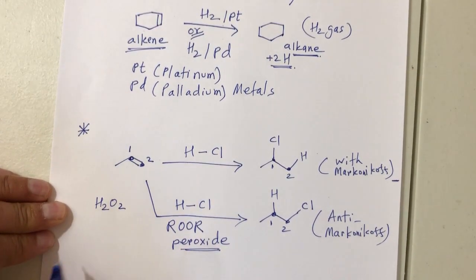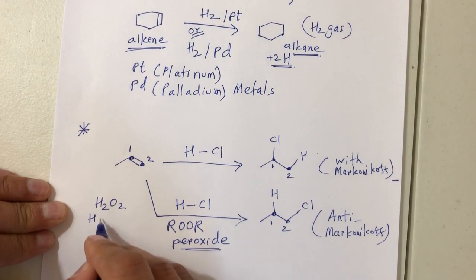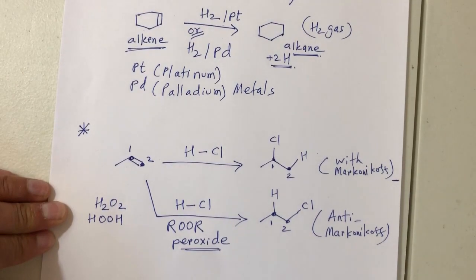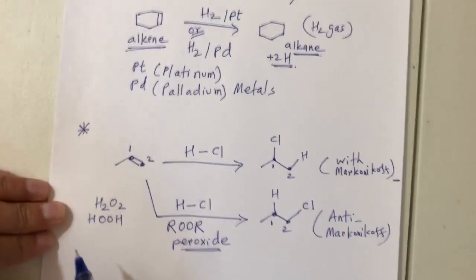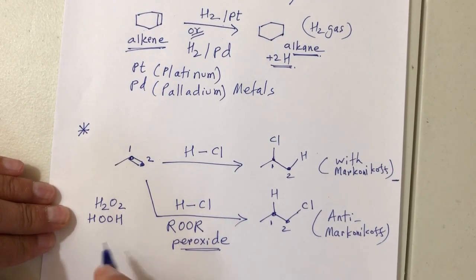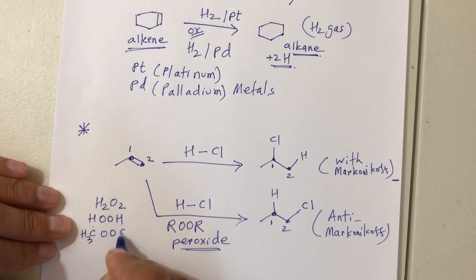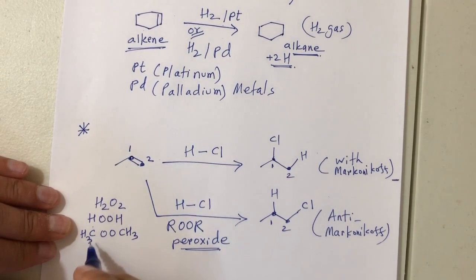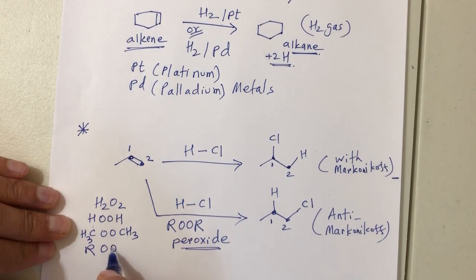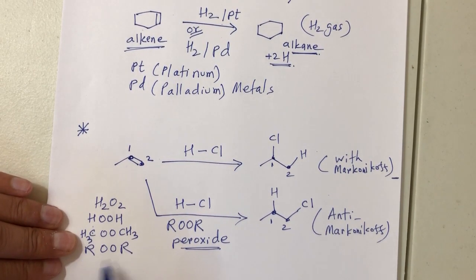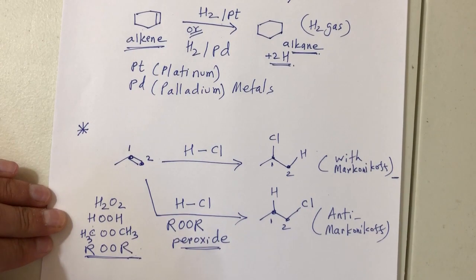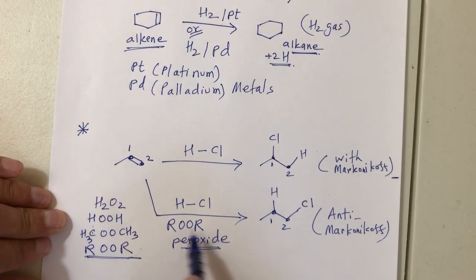Peroxide has two oxygens. It can be written as H₂O₂ (hydrogen peroxide) or HOOH. You can also replace the hydrogen with a carbon (R group), giving ROOR. In general, peroxide is written as ROOR. Anytime you see a peroxide or ROOR in your reaction, that means you are going anti-Markovnikov's.